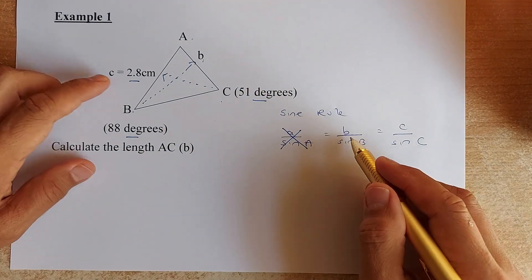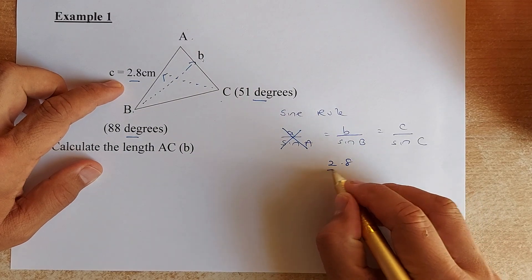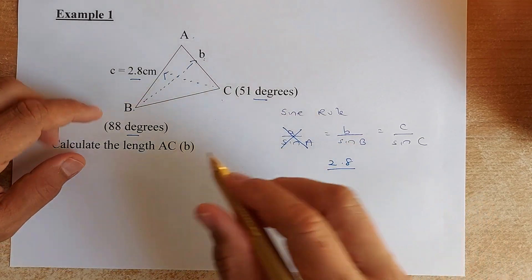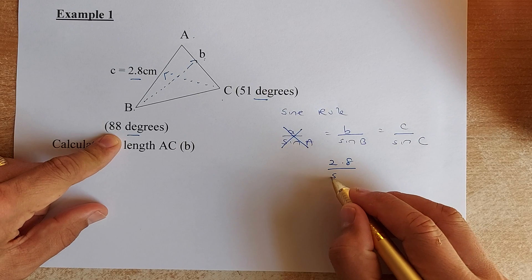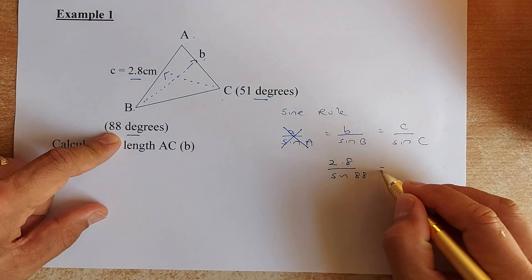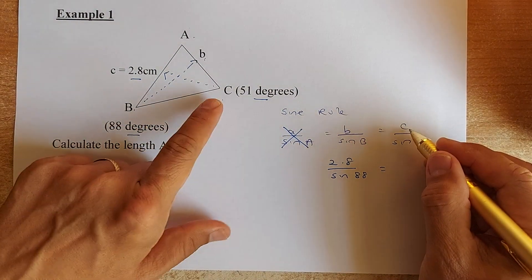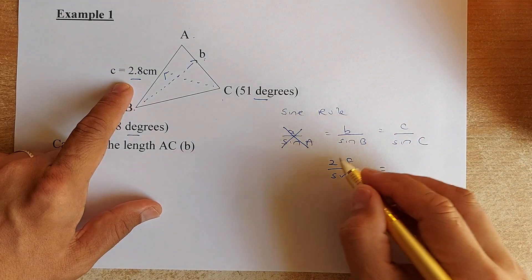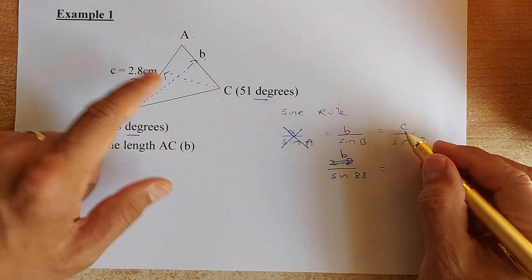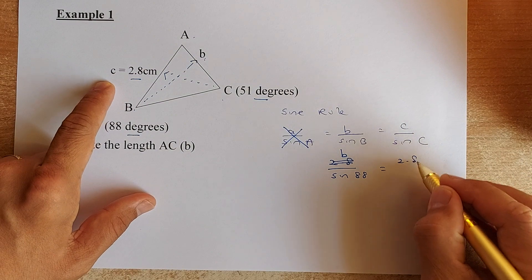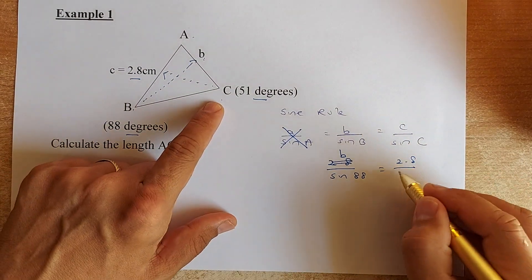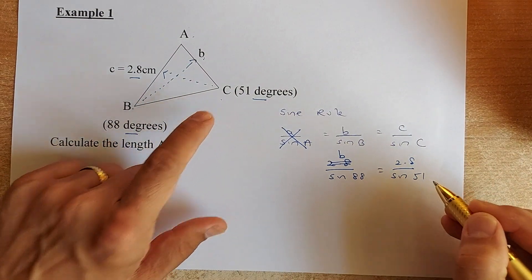We are going to put the values in b and c into the equation. Lowercase b is 2.8, oh sorry, we are going to find b actually. c is 2.8 and sin(C) is sin(51). Then angle B is going to be 88 degrees, so we are going to be sin(88).